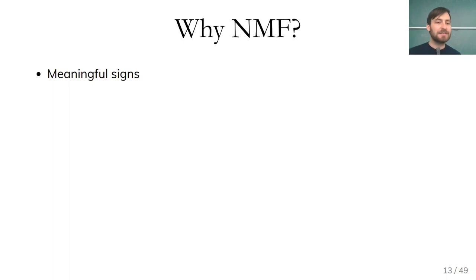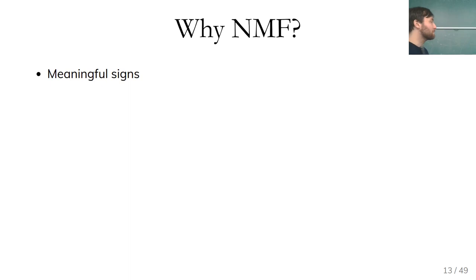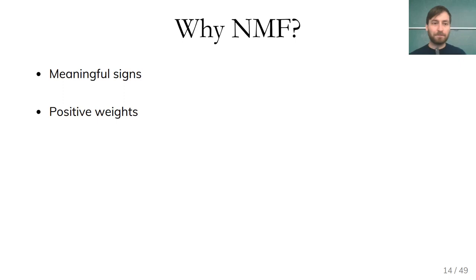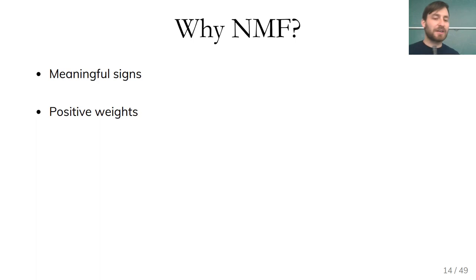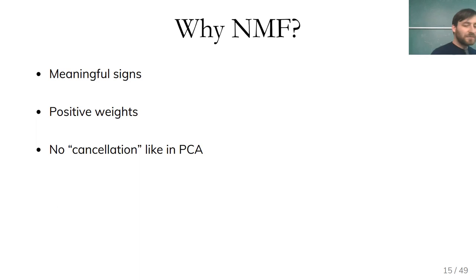Why NMF over other matrix factorization algorithms? One interesting property is meaningful signs. In PCA, the sign of eigenvectors is completely arbitrary, making PCA directions harder to understand. In NMF, everything is positive — zero has a meaning, and positive has a clear meaning. The weights are positive, so combinations are always positive linear combinations, which are easier to understand. I mentioned the cancellation effect in PCA, where one component might create something and another removes it. We'll see this with MNIST.